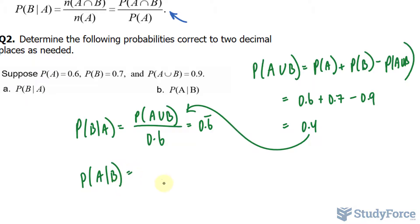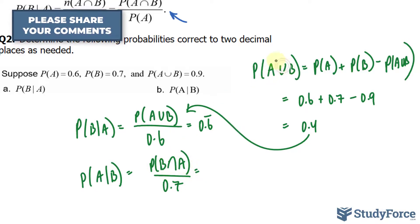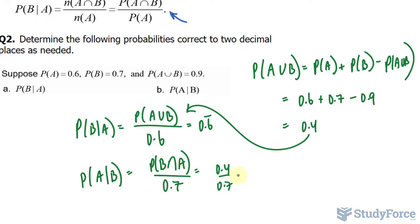The probability of selecting B is 0.7, and now we use the probability of B intersecting with A. B intersecting with A is the same as A intersecting with B, and we found that it was 0.4 divided by 0.7.